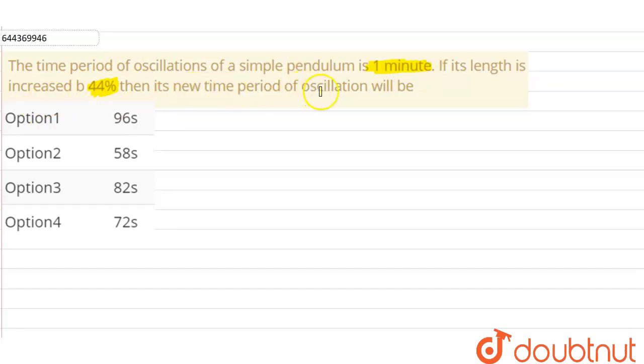Okay, so we have been given the time period of oscillation of a simple pendulum as one minute. And if the length of the simple pendulum is increased by 44 percent, then what will be its new time period of oscillation?